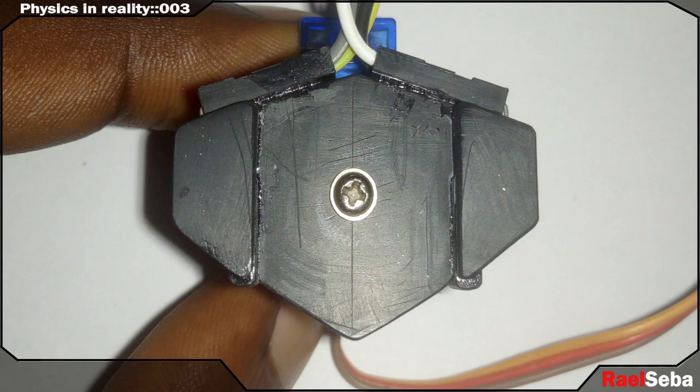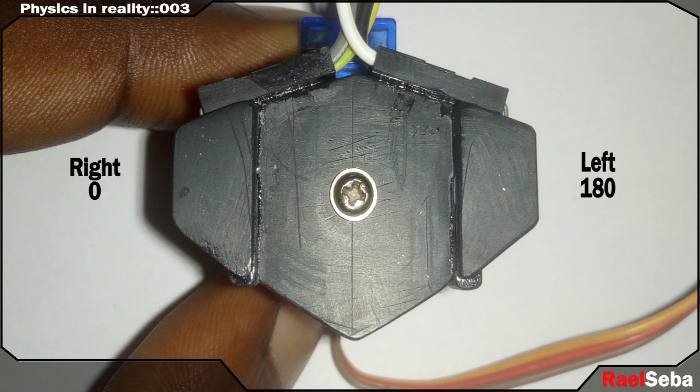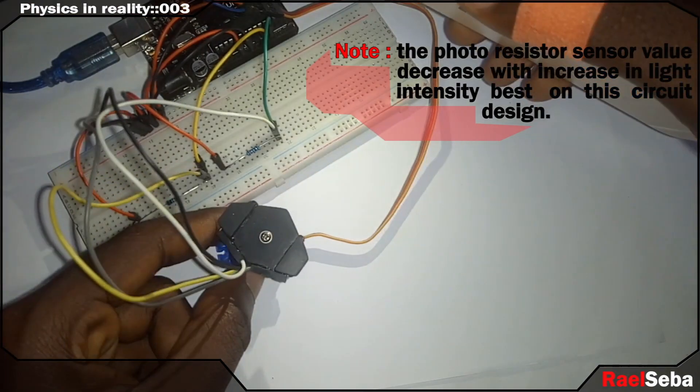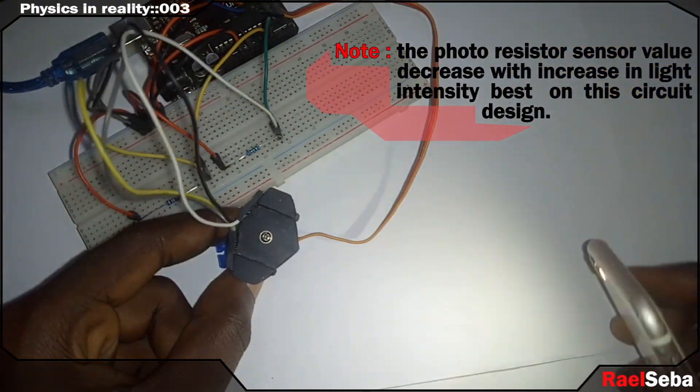This is how it works. If the left photoresistor sensor value is less than the right one, the servo will move in that direction. And if the right one is less than the left one, it will move toward right. Or let me say the servo will always move in the direction of the photoresistor with the less sensor value.